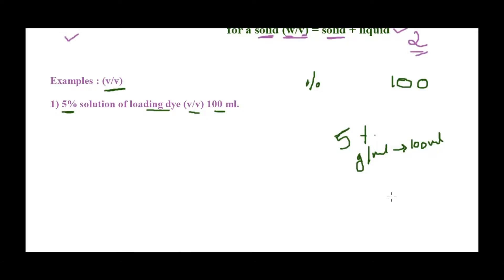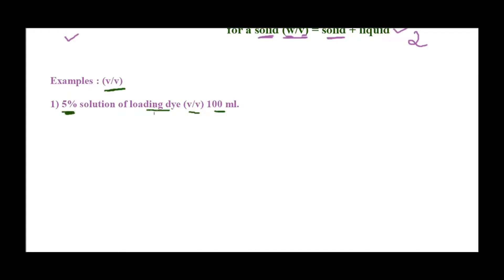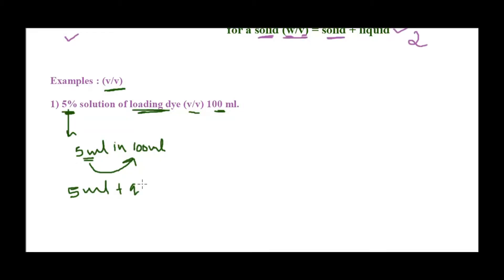If I say I want a 5% solution, I take 5 ml or 5 grams and make it up to 100 ml. If it is 2.5%, I take 2.5 in 100 ml. So for the gel loading dye example — 5% in 100 ml — I take 5 ml of gel loading dye plus 95 ml of distilled water and make it up to 100 ml.